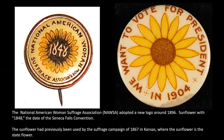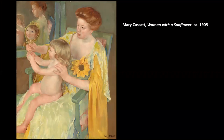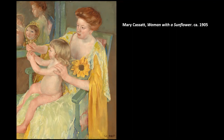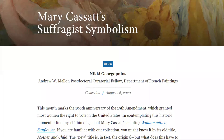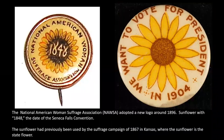It had been sort of dismissed. Many scholars and art historians had looked at the flower and found its color interesting, writing about the way it corresponds with the color of the woman's clothing. But Georgopoulos really asks us to see it in another way — to note its meaning. She links the sunflower to buttons and sunflowers of the women's suffrage cause, and I'm showing you a couple of examples here on the screen.